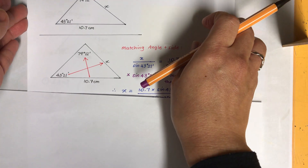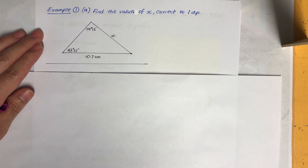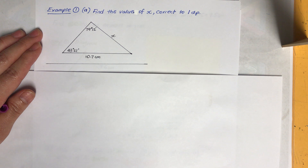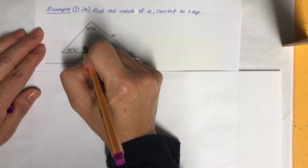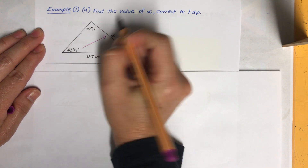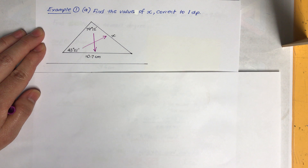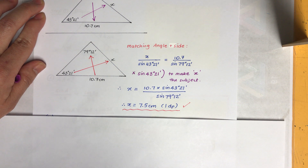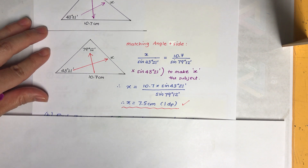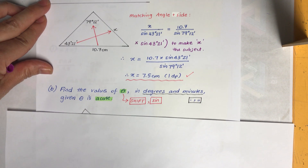Now let's start Example 1. Find the value of x correct to one decimal place. It's important to match the angle with its opposite side when using the sine rule. Set up the ratio, match up correctly, make x the subject, and solve.